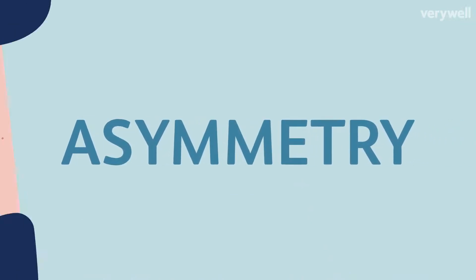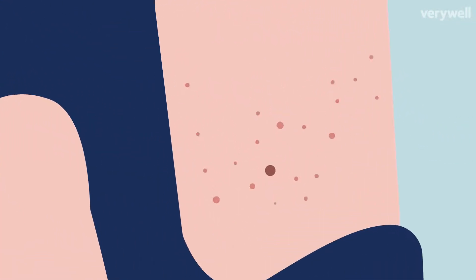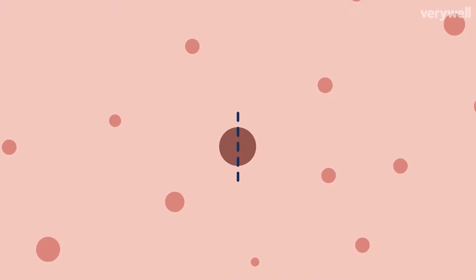A is for asymmetry. Most moles or freckles are symmetrical, meaning if you drew a line down the middle, both sides would look identical. In skin cancer, spots are asymmetrical, meaning they don't look the same on both sides.